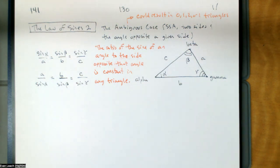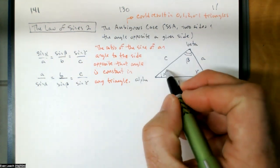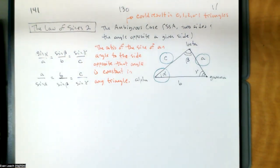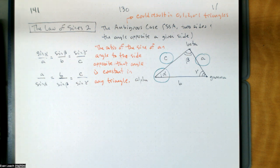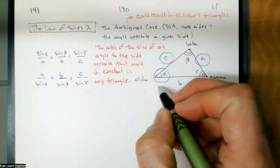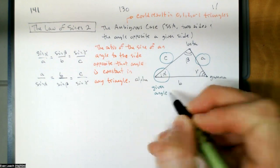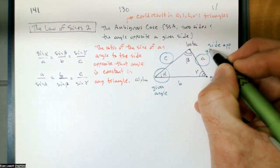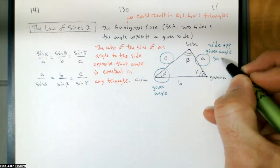Let's take as our given information alpha, A, and C — that's an ambiguous case. Alpha is going to be the given angle. A is the side opposite the given angle — I abbreviate that SOGA, side opposite given angle, because I don't want to write that out so much.